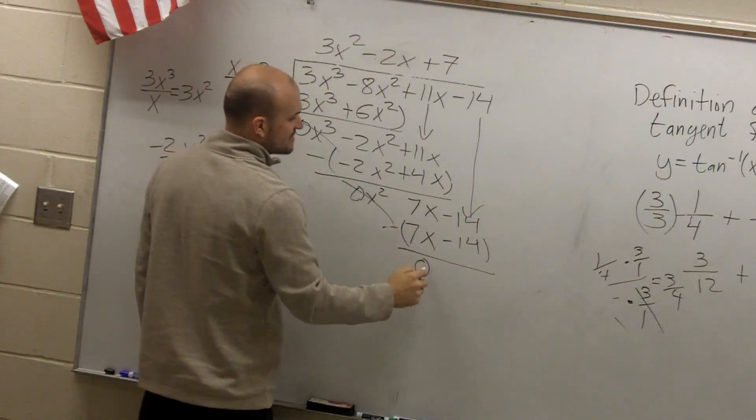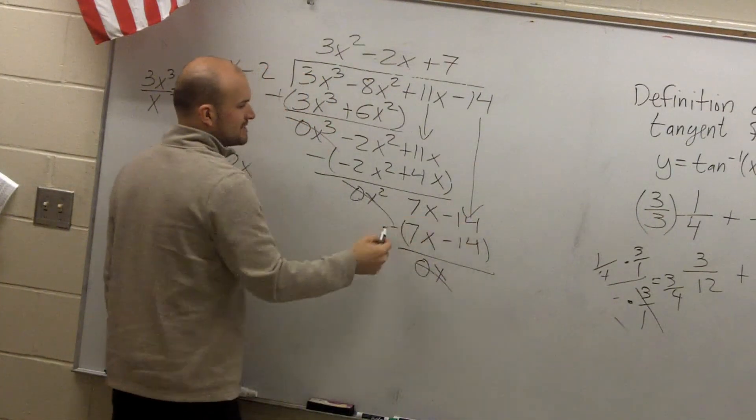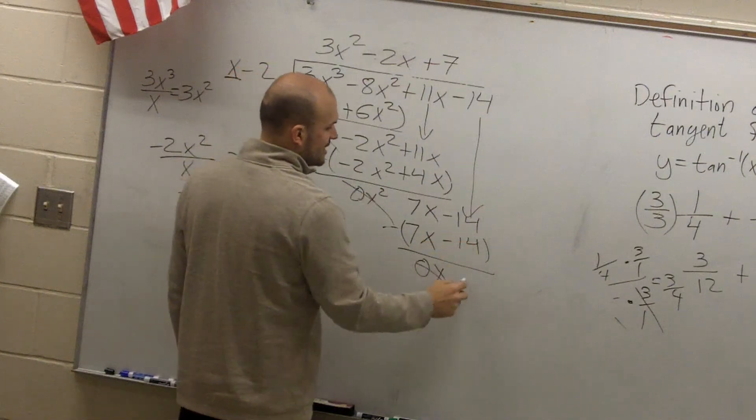7x minus 7x is 0x. Negative 14 minus negative 14, double negative, is 0.